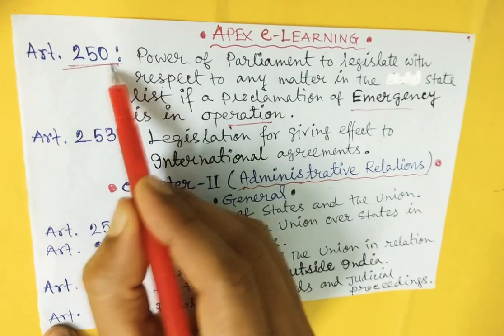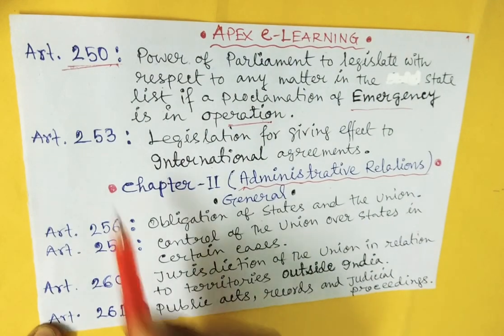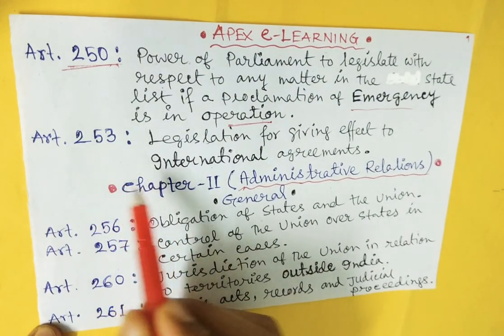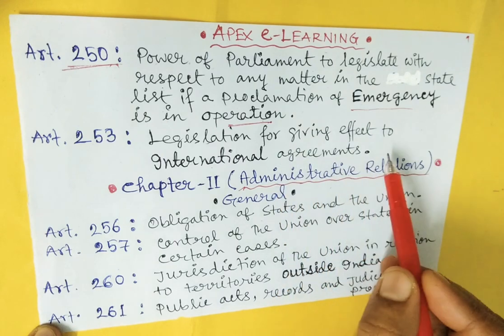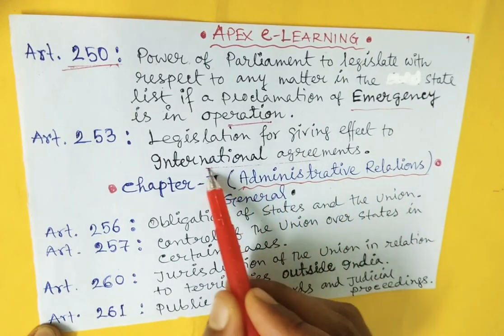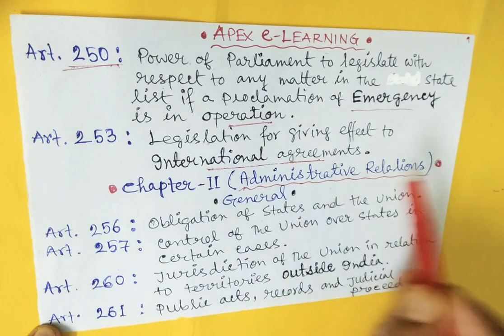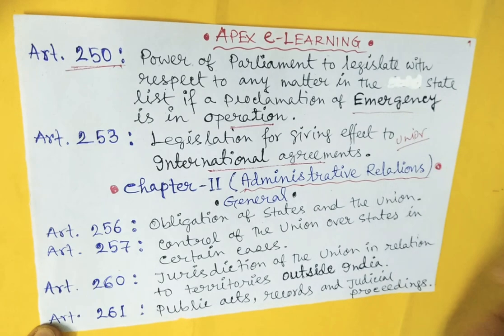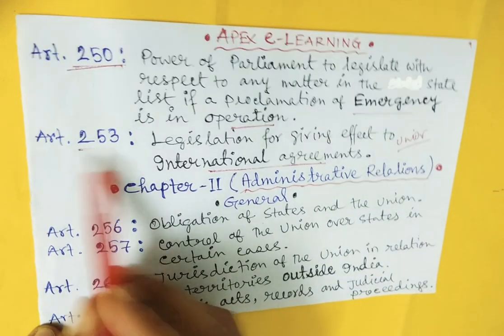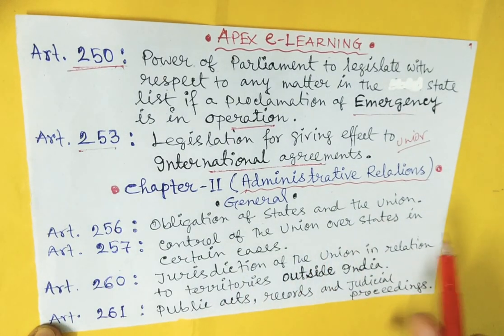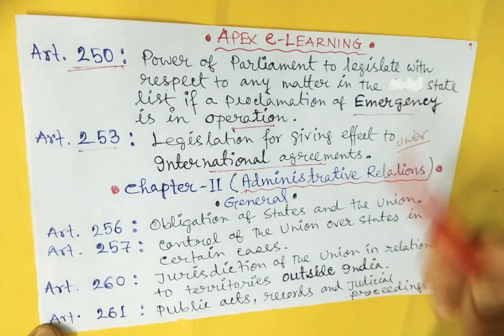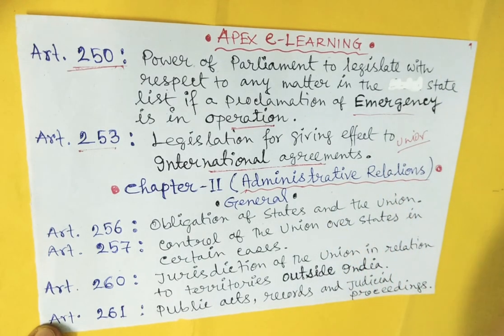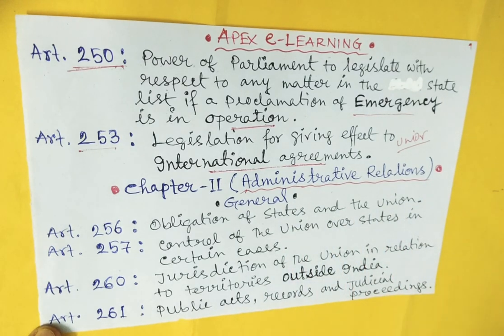Article 250 is the power of Parliament. Article 253 is the power of legislation for giving effect to international agreements. This is Chapter 2 of the administrative relations, which covers the legislative relations between the center and the administration of the states.